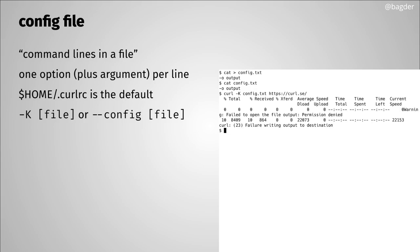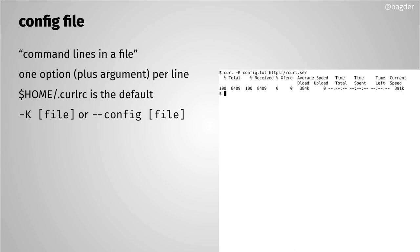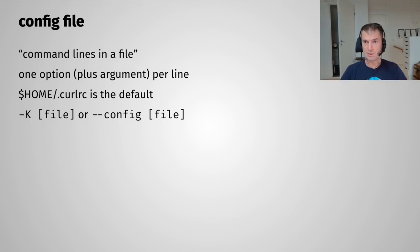When I run it, curl finds the command line options in the config file and sees it should save to the output file. It failed the first time due to a permission issue, but after removing the existing output file and running again, it works — it saves the web page into the file. You can put any and all available command line options into this file.